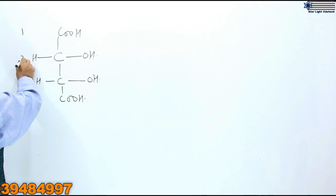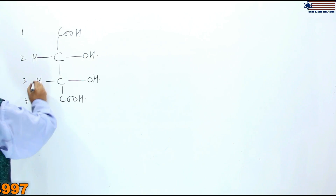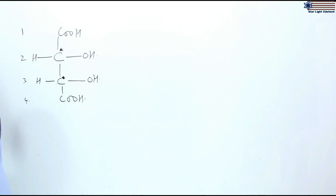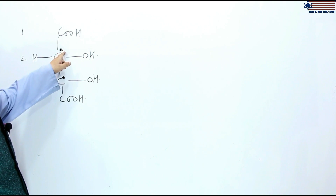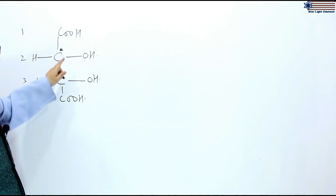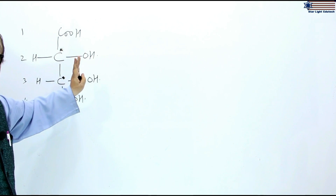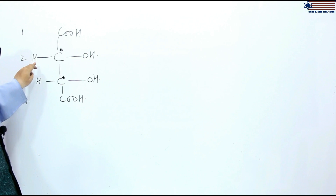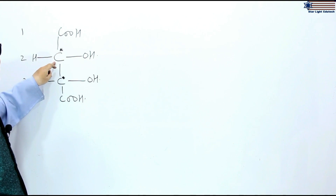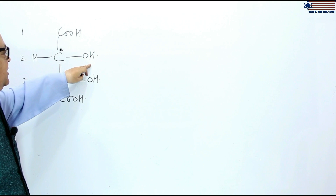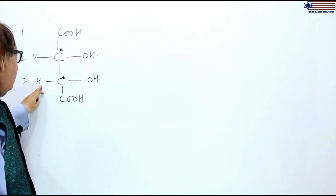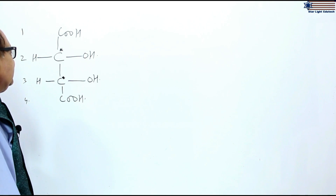This is carbon number 1, 2, 3 and 4. Now carbon number 2 is a chiral carbon atom and carbon number 3 is also a chiral carbon atom. H and OH at chiral carbon atom number 2 and 3 are arranged horizontally such that H is at the left-hand side and OH is at the right-hand side at both chiral carbon atoms number 2 and 3.